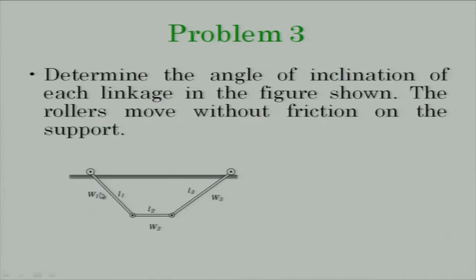There are three linkages: W1L1, W2L2, W3L3. These are pinned at two points and this is a frictionless surface on which these wheels can roll. What you are asked to find out is what is the angle of inclination — in other words, what is the final configuration for this system when the system is in equilibrium, and whether that configuration is stable or unstable.